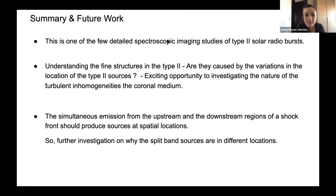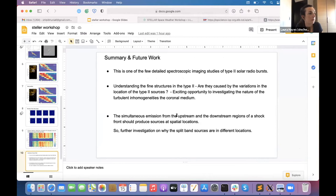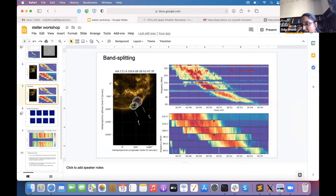Thank you so much, Shilpi. Really interesting work and fantastic plots and observations. Just on your last point — do you usually see band-splitting sources in different locations, or are they usually closer together? The thing is that upstream and downstream are from ahead and behind the shock front, and the thickness of the shock should be very thin, so they should be at almost co-spatial locations.